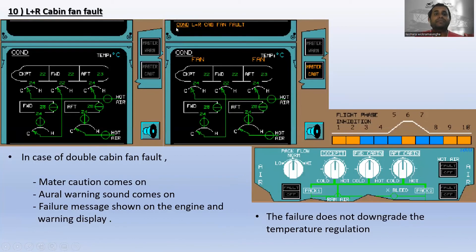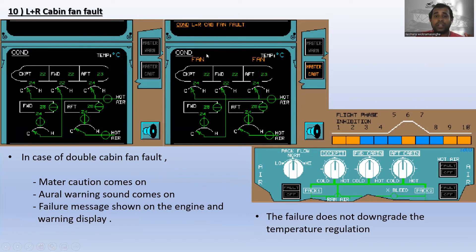In case of double cabin fan fault, master caution comes on, oral warning sounds as a single chime, and the failure message is shown on the engine and warning display. On the conditioning page, a fan fault message appears in amber color. This failure does not downgrade the temperature regulation. It occurs in flight phases one, two, six, nine, and ten, with no failure message appearing on the control panel.